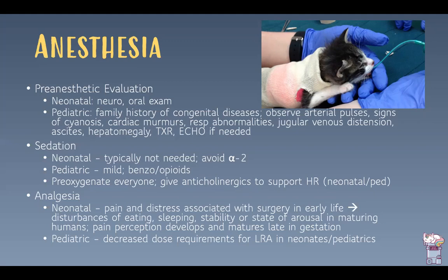Don't neglect analgesia. Less than 100 years ago, human babies were paralyzed for open-heart surgery because it was believed their pain pathways weren't fully developed. However, pain pathways have been scientifically proven to develop late in gestation and are fully developed by birth. Pain and distress from early surgery can disturb eating, sleeping, and maturation. Pain perception at any age must be addressed. Making sure these patients have appropriate analgesia is critical because it affects them later in life. Neonates and pediatrics have a decreased dose requirement for local and regional anesthesia — adjust the dose, but don't skip it.